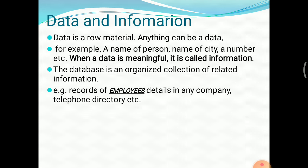In the context of the database, data is a raw material. For example, a number or a city name on its own is just raw data. But when that data is given meaning — for example, combining first name, son name, and middle name into a proper format — it becomes meaningful, and that meaningful data is called information. Father's name, for instance, is meaningful data.